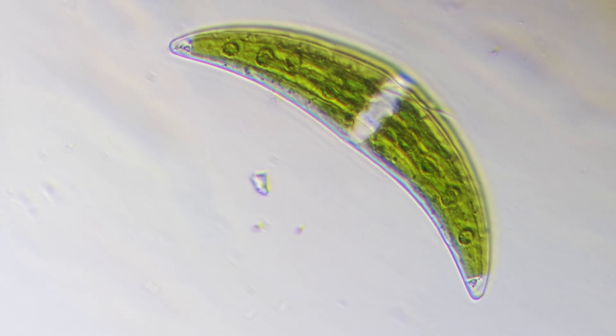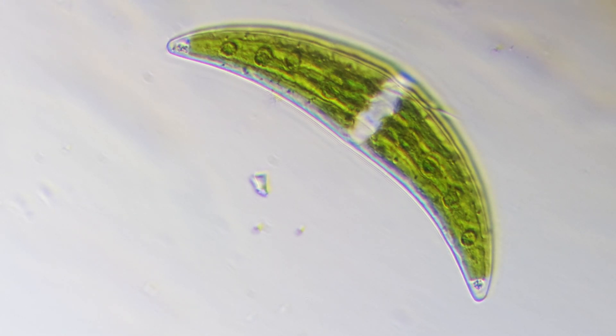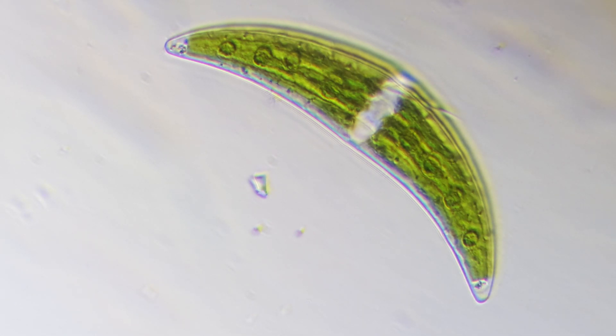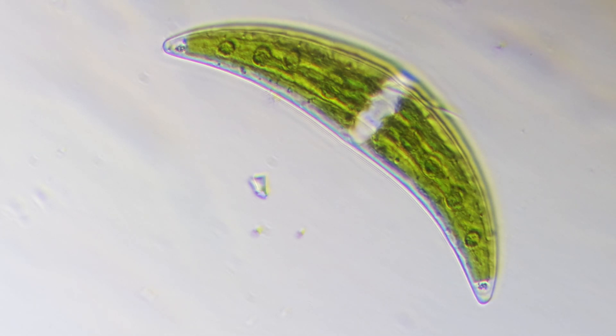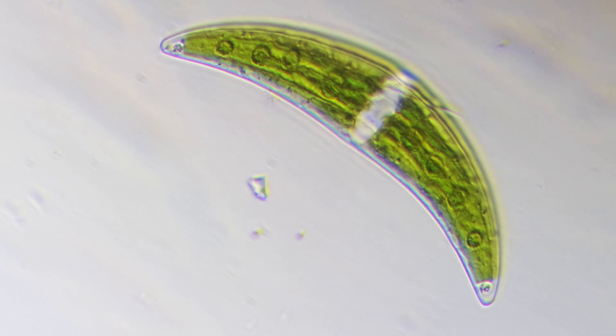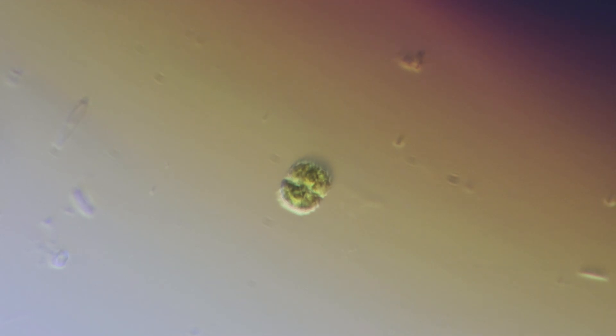This one seems relatively content to sit in place, which may be simply because it is pinned between the narrow space of the slide and cover slip. Certainly if you notice its size compared to the other plankton and microorganisms around it, the Closterium is huge, at least on the microscopic scale. Ultimately Closterium is a desmid, a relatively common form of algae that live in fresh and salt water that are noteworthy for their beautiful shapes and symmetry.